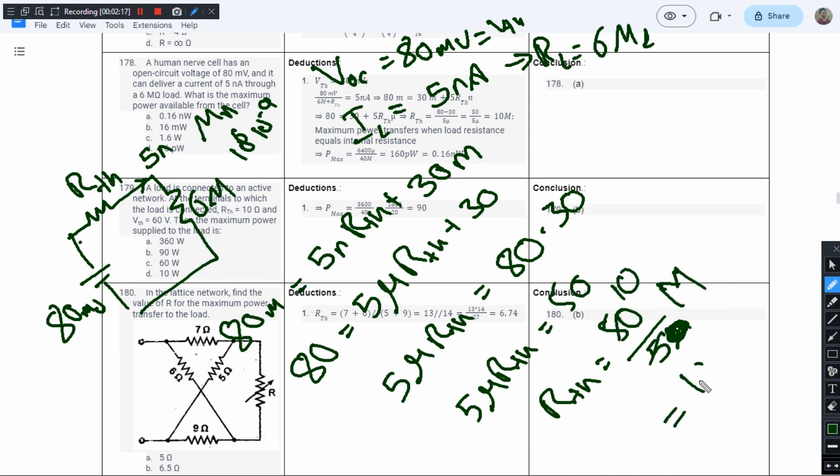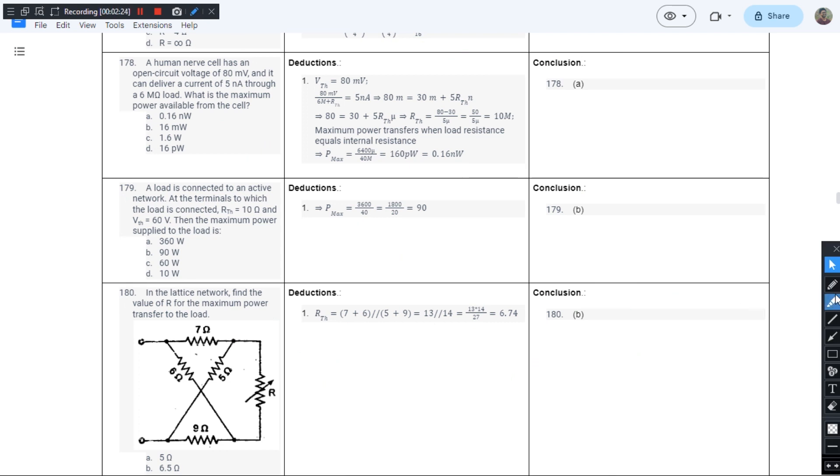So the Thevenin resistance is 10 megaohms. This is the internal resistance of the nerve cell. We have the open circuit voltage equal to 80 millivolts and Thevenin resistance equal to 10 megaohms, and we need to find P_max.